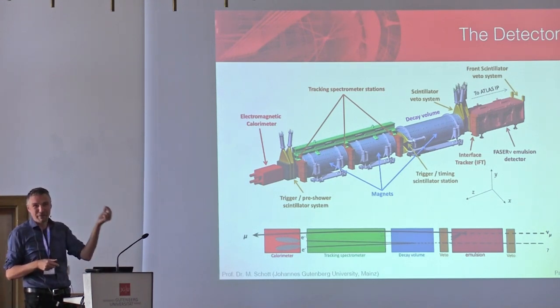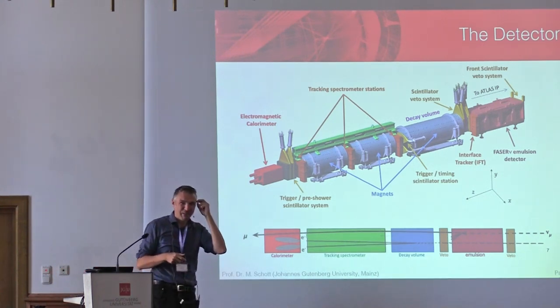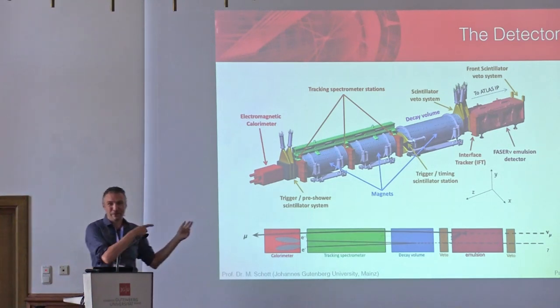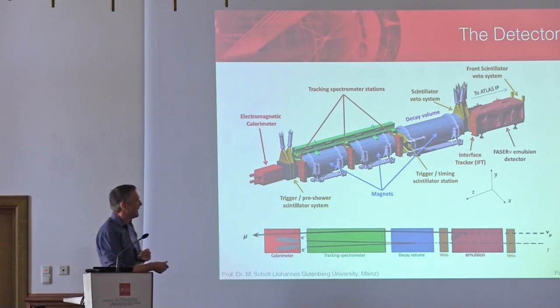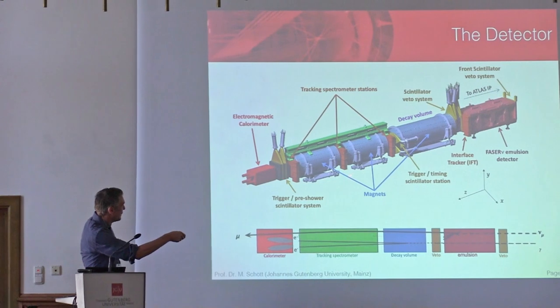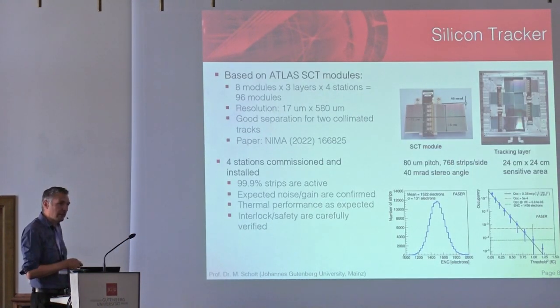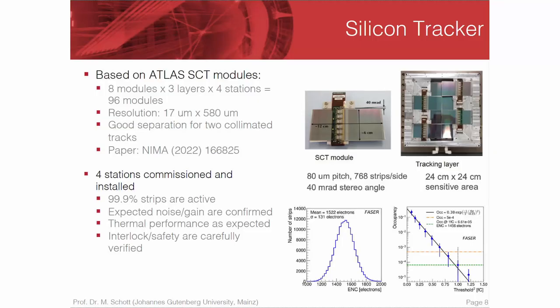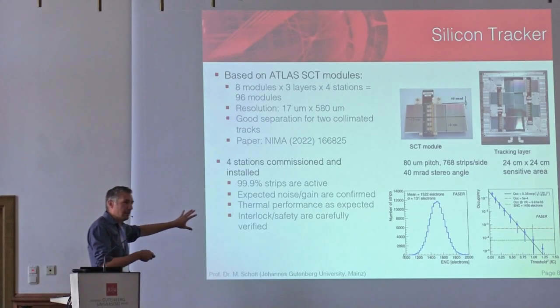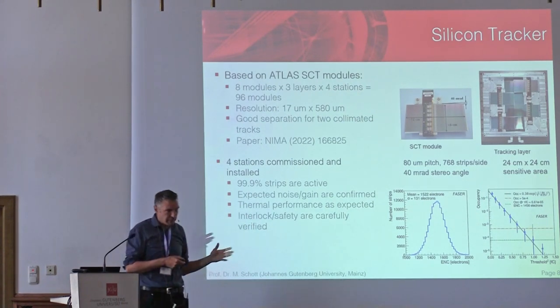In three years of planning we actually managed to get this done, not only because we have an amazing team but also because lots of the things we use had been pre-made. For the tracking system we use leftovers of the ATLAS SCT modules — 96 modules in total — with a very good resolution of 17 microns over roughly 600 microns pitch. This is very good for separating two tracks in the dark photon case, for example two electrons or two muons. Four of those stations have been commissioned and installed, and more than 99.9% of the strips are still active.